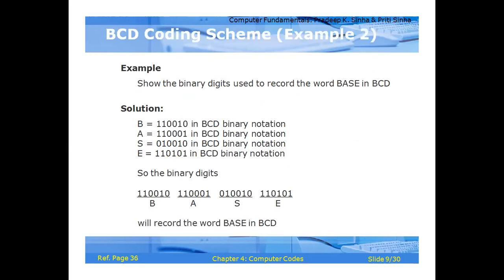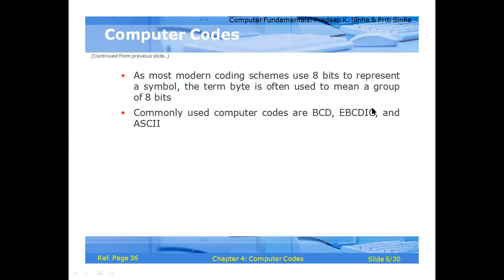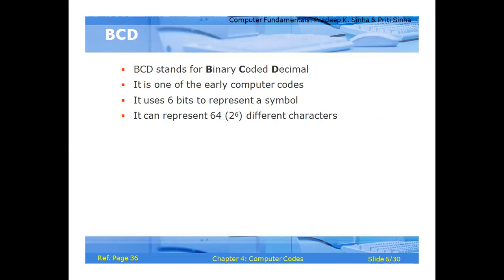In conclusion, computer codes are used for the internal representation of data in a computer. The main codes are BCD, EBCDIC, and ASCII. BCD stands for Binary Coded Decimal and uses 6 bits. EBCDIC stands for Extended Binary Coded Decimal Interchange Code and uses 8 bits. ASCII stands for American Standard Code for Information Interchange and has two types: ASCII-7 (7-bit) and ASCII-8 (8-bit).